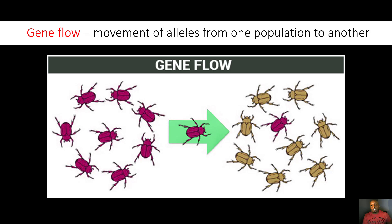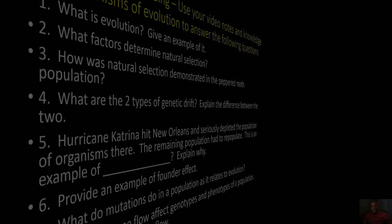The last mechanism of evolution is gene flow — the movement of alleles from one population to another. For example, a purple beetle migrates into a brown beetle population, bringing its alleles with it. If it reproduces with a brown beetle, it introduces its alleles into that population, causing changes in the population's genotype and phenotype over time. The same applies if a brown beetle migrates into the purple beetle population. Gene flow causes evolutionary change by transferring alleles between populations.